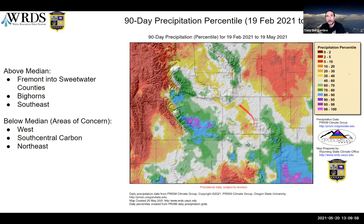This area down in the south central part of the state, which was showing up as D3, has been there for several months. Up in the northeast part of the state, we have about the same conditions as in the western part of the state. A large area is right about the median around Fremont County, and then in the southeast we're still above median, though a lot of that is residual from earlier precipitation over the 90-day look.